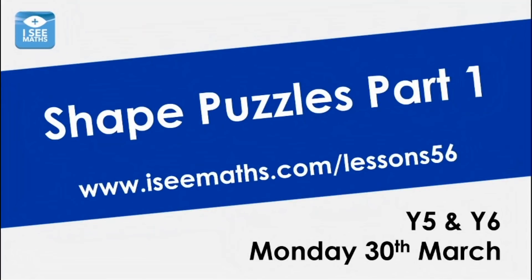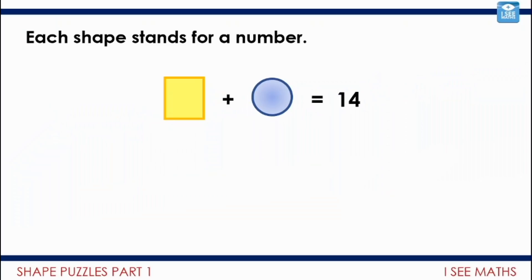So here we go, welcome to Shape Puzzles Part 1. The shape puzzles involve addition and subtraction skills. We're going to build on what we've done before. Shapes represent numbers—that's the key thing for you to know. Let's have a look at this first example. Each shape stands for a number, so the rectangle plus the circle equals 14.